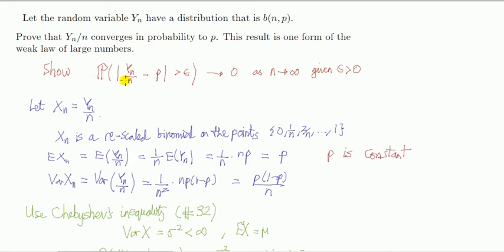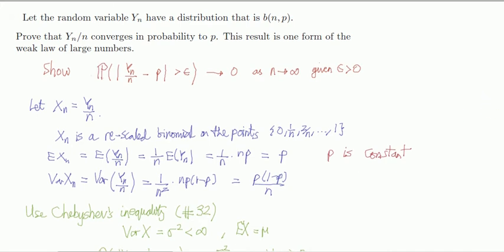Okay, well this is a random variable, let's just call it xn. Then see that since yn is binomial, xn is going to be a rescaled binomial. It's going to be a binomial but with the points zero, one over n, two over n, all the way to one. That's not actually going to be important here, but I just added that.